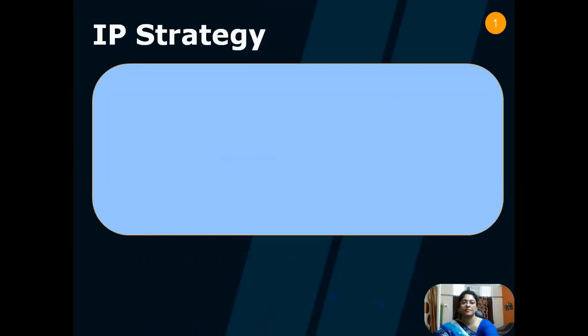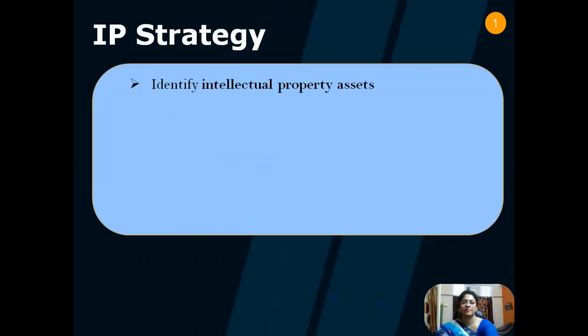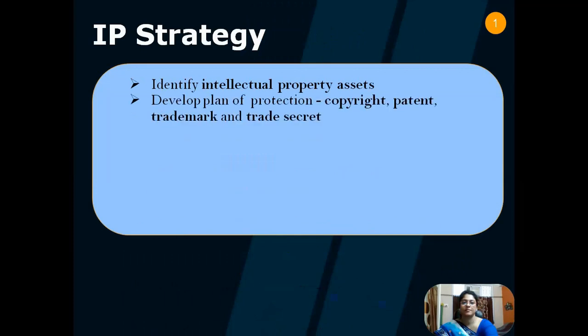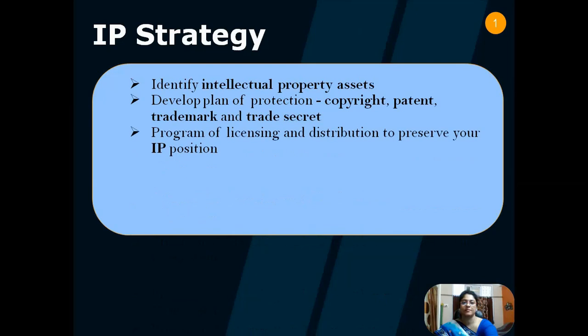Let us look at the different IP strategies. First, you have to identify intellectual property assets. Then develop a plan of protection through four major forms of intellectual property: copyright, patent, trademark, and trade secret.